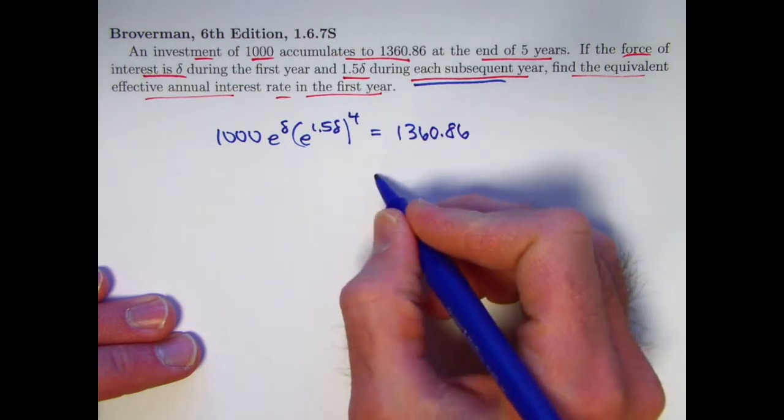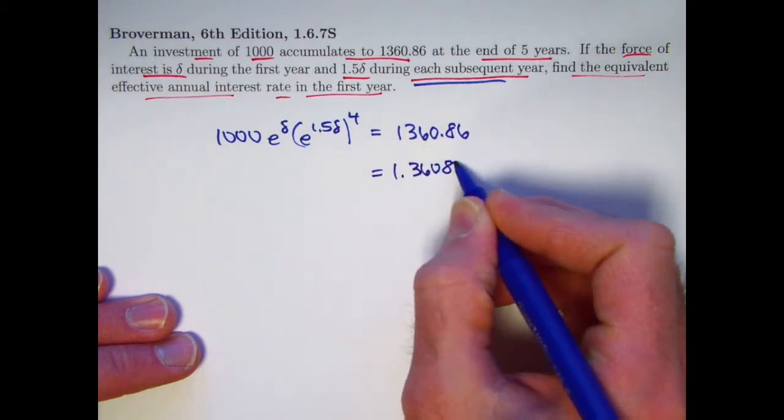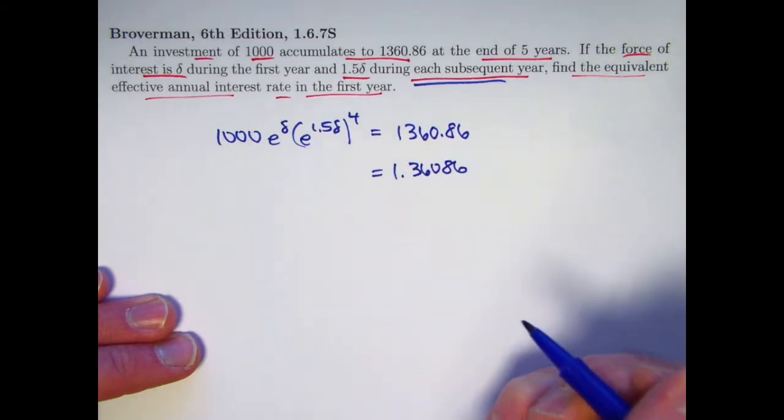Simplify first a little bit. We can divide both sides by a thousand and get 1.36086 on the right side and a thousand cancels on the left side.